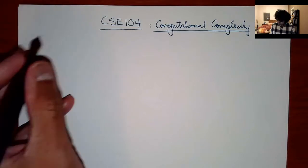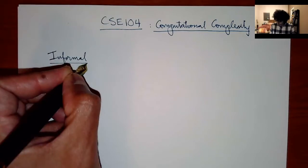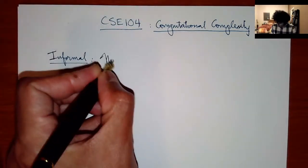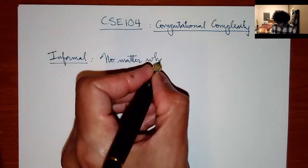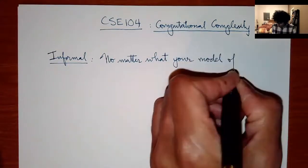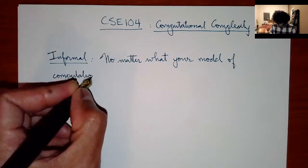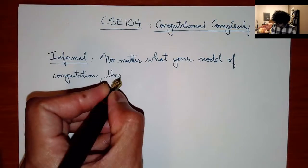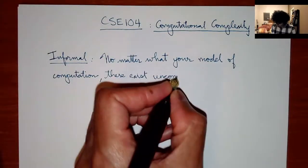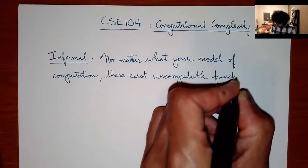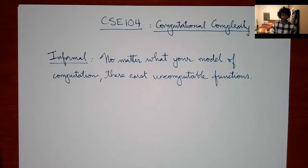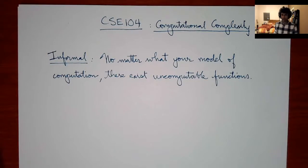Let me state it informally first, then formally. The informal statement is: no matter what your model of computation, there exist uncomputable functions. This is a deeply profound, almost philosophical statement. It's remarkable that you can even prove something about this. I still remember the first time I saw the proof — it completely blew my mind. The more times you see it, the more you understand how profound it is.